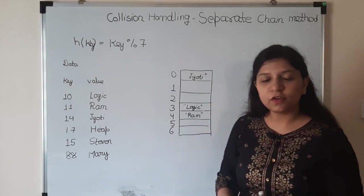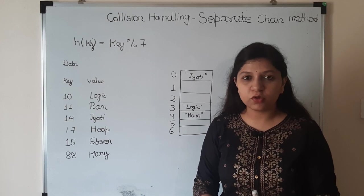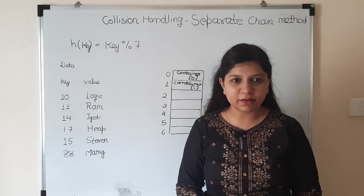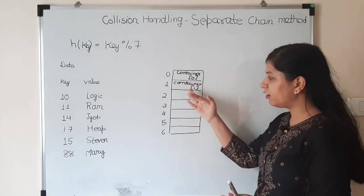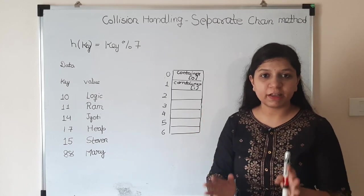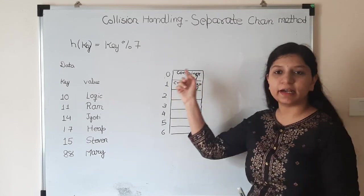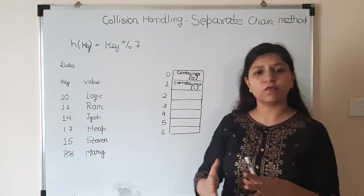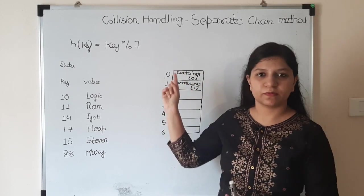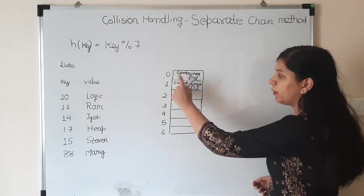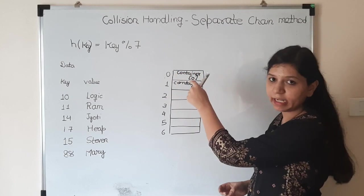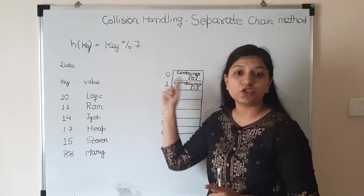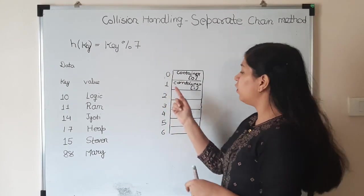In this tutorial we're going to use a very famous method called Separate Chain method. It's really easy to understand. Earlier we were keeping values, but instead consider this as a container - container 0, container 1. You can implement containers in many ways. One way is to make a list here, so at 0 we have a complete list to maintain all those key value pairs which have the same hash value.